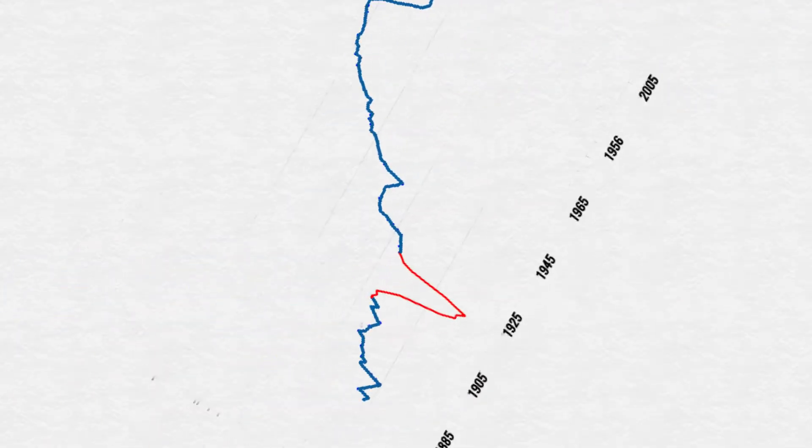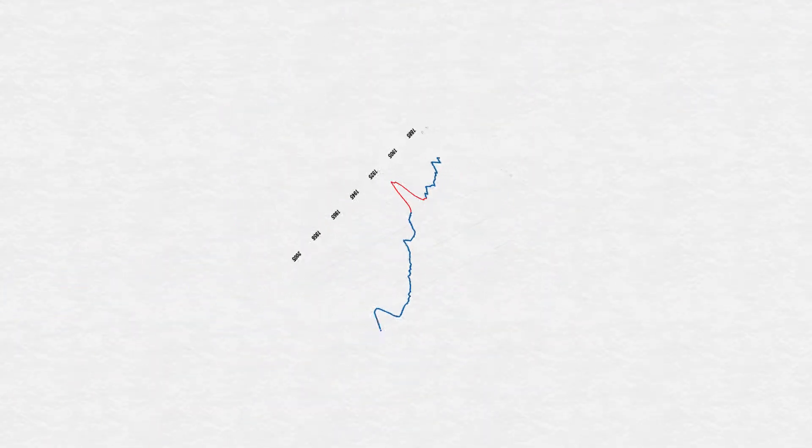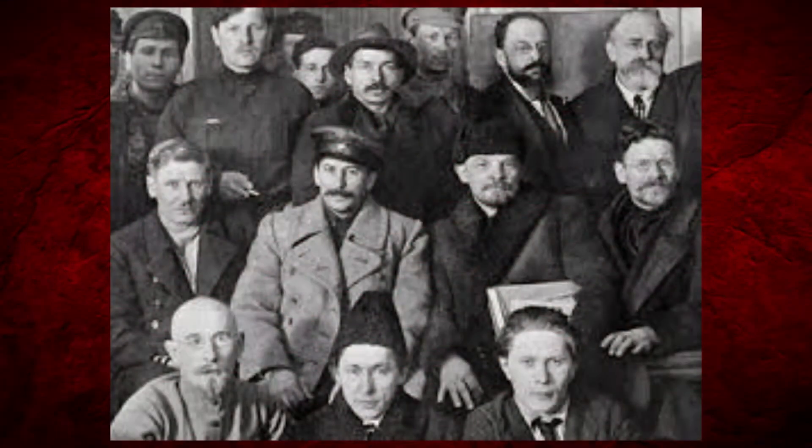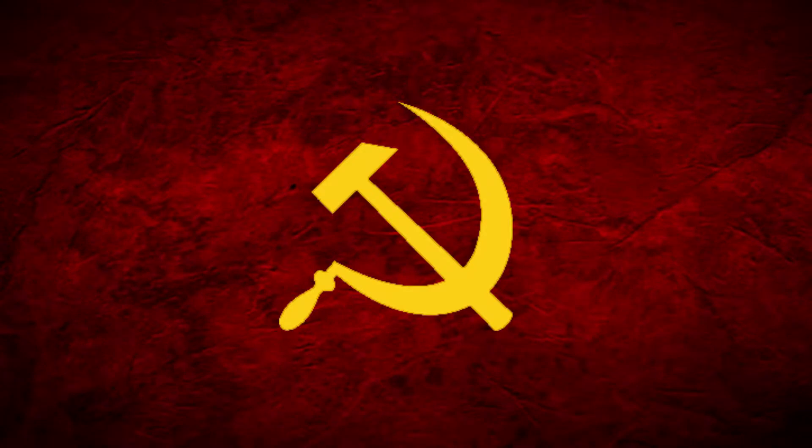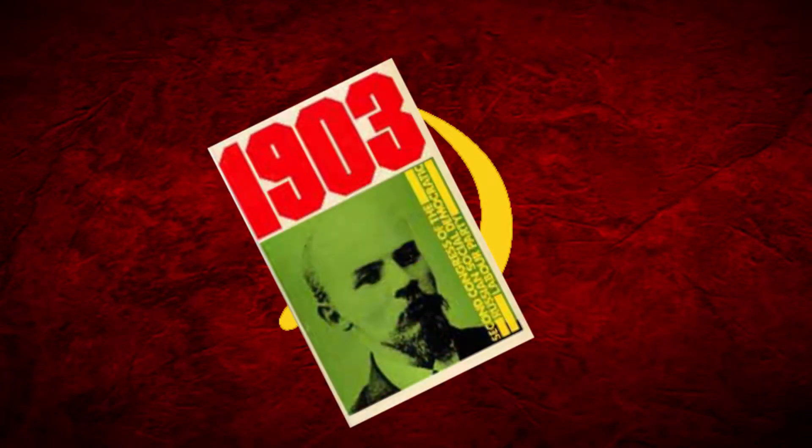Even with the new provisional government, corruption was still rampant, and many people still didn't want to stay in the war, as the economy had been heavily disrupted by the costly war efforts. This time, the Russian people were led by the Bolshevik party. The Bolsheviks were a faction of the Marxist Russian Social Democratic Labor Party, determined to make Russia a Marxist communist state and give everything to the people. This was made possible with a strong leader like Vladimir Lenin.